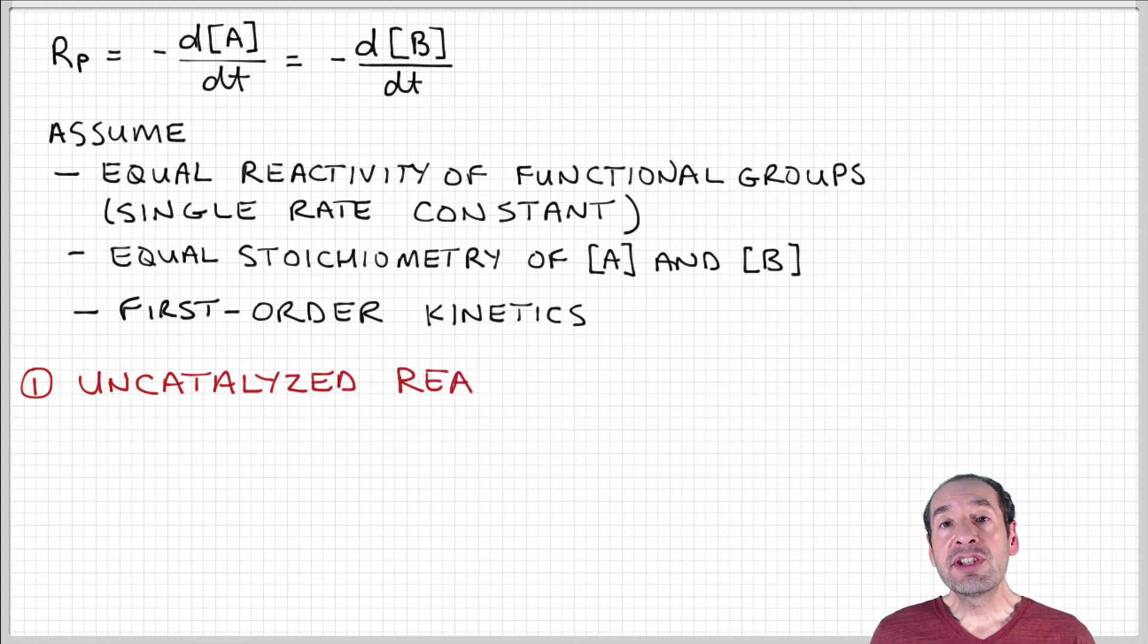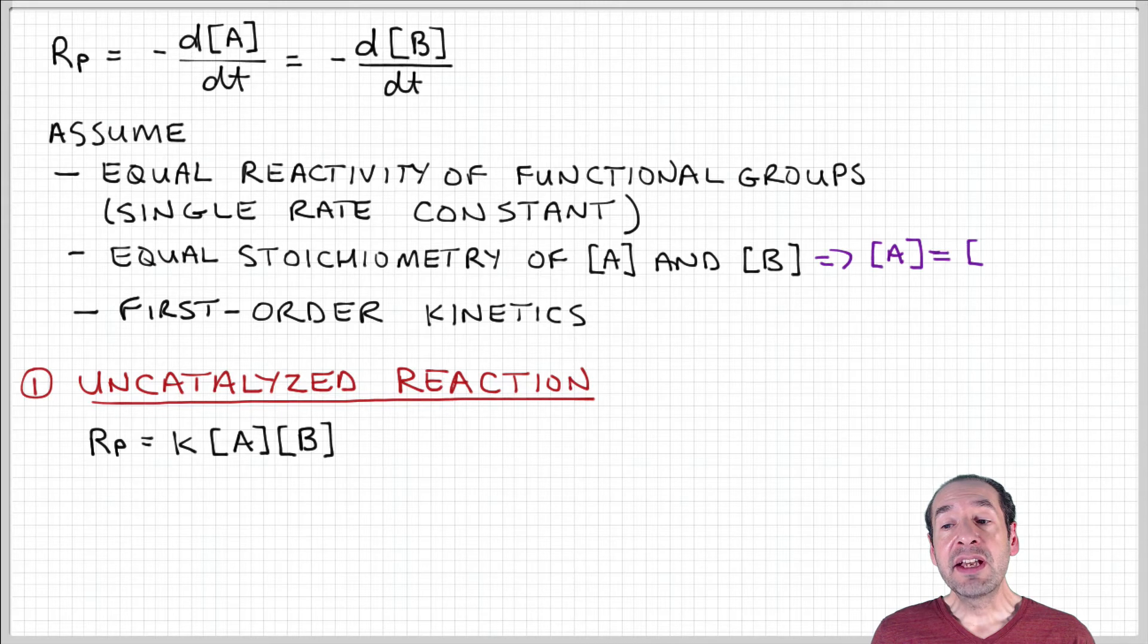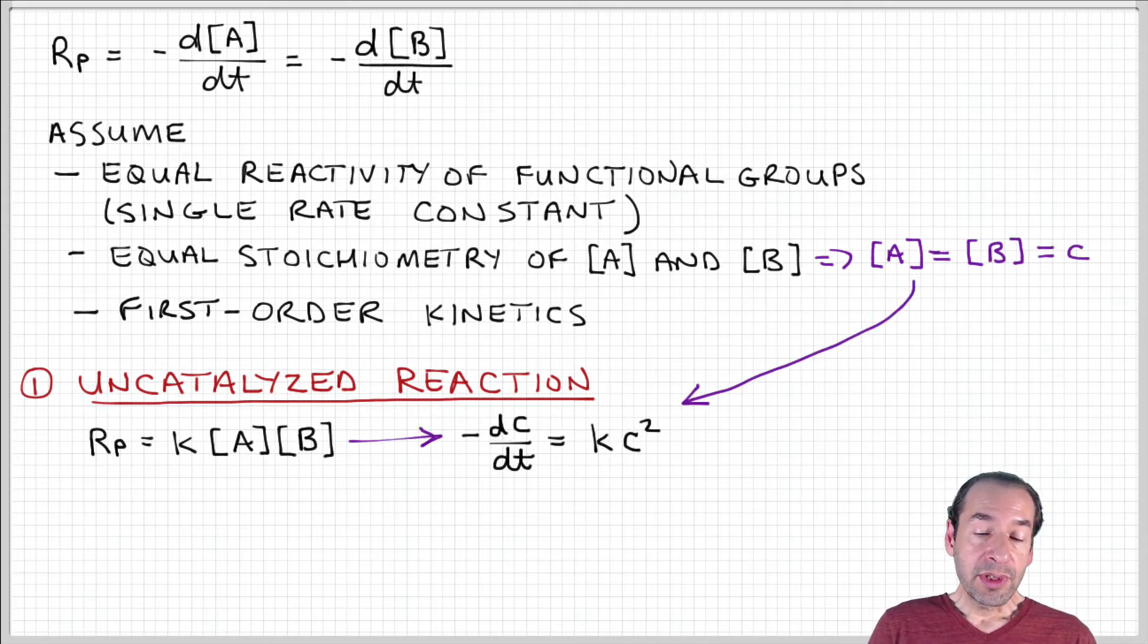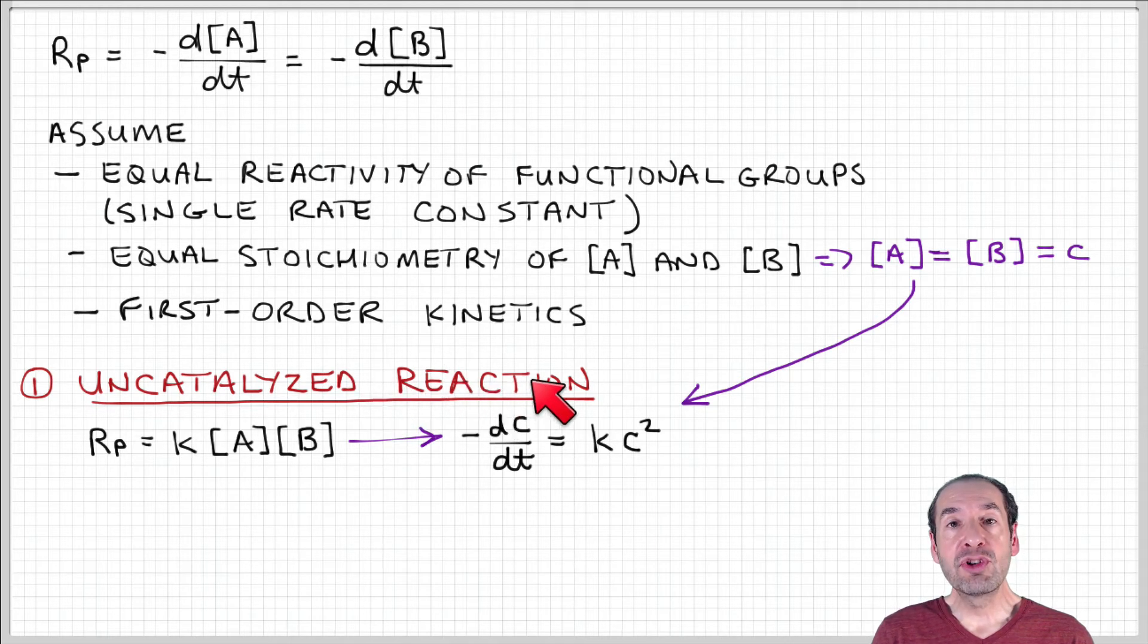With those assumptions, we can consider an uncatalyzed case. We don't add an additional chemical component to start or keep the reaction going. I can express the rate of polymerization as equal to some rate constant K times the product of the concentrations of monomer A and B.